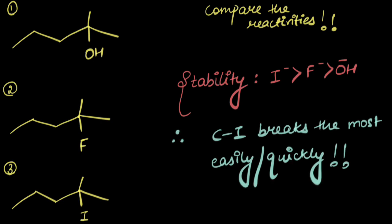So the C-I bond breaks the most easily. So which of the following would react the fastest via SN1? It would be the third one, and the one that reacts the slowest would be the first one.